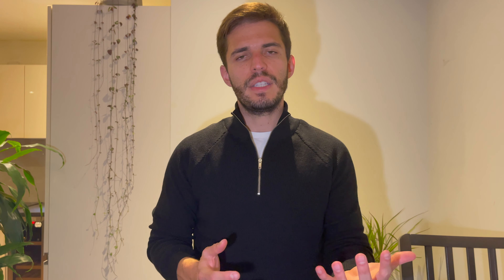An easy way to calculate EBITDA is to go to the income statement and find the operating income or income from operations, which already includes the addition of the interest and taxes. Then go to the cash flow statement and find the depreciation and amortization for the same time period. You add those to the operating income and that will give you EBITDA.